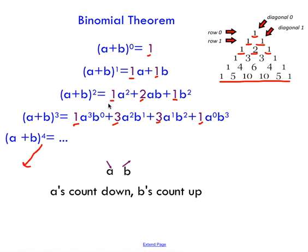The pattern is: the first term, a, has an exponent that starts at the highest possible value. So for a plus b squared, the highest possible exponent would be a squared — at most I'm multiplying a times a. So I start with a squared and gradually work my way down until I have a to the power of zero. For a plus b cubed, I start with a to the three, a to the two, a to the one, a to the zero. The second term, b, starts at zero and works its way up to the largest possible exponent. So for the cubed case, I start at zero and work my way up to b to the power of three.